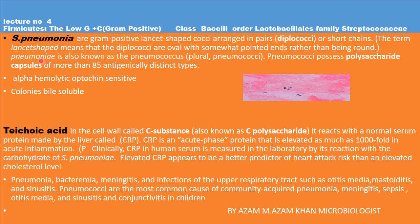Streptococcus pneumoniae is also known as pneumococcus (plural: pneumococci). Pneumococci possess a polysaccharide capsule with more than 85 antigenically distinct types. Key properties: alpha hemolytic, optochin sensitive, and colonies are bile soluble.